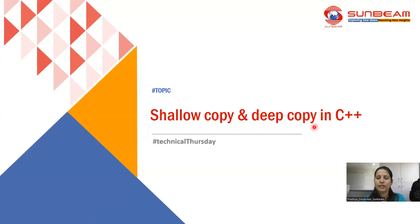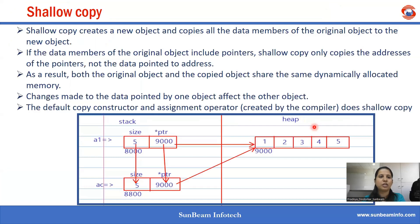Let us see shallow copy and deep copy in C++. Shallow copy creates a new object and copies all the data members of the original object into the new object.